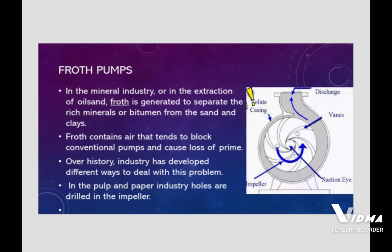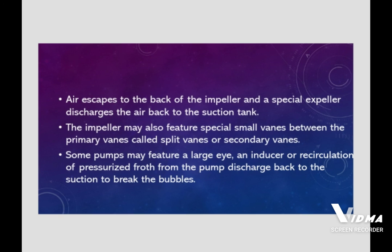Froth pumps are used in the mineral industry or in the extraction of oil sands. Froth is generated to separate the rich minerals or bitumen from the sand, but froth contains air that tends to block conventional pumps and cause loss of prime. Over time, industry has developed different ways to deal with this problem. In the pulp and paper industry, holes are drilled in the impeller. Air is kept to the back of the impeller, and special impellers discharge the air back to the suction tank. The impeller may also feature special small vanes between the primary vanes, called split vanes or secondary vanes. Some pumps may feature a large eye, an inducer, or recirculation of pressurized flow from the pump discharge back to the suction to break the bubbles.